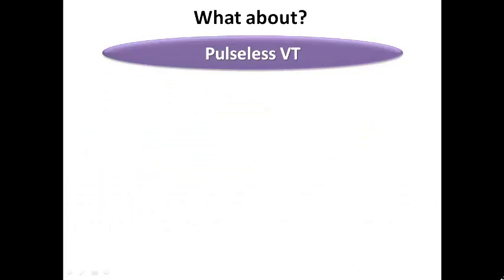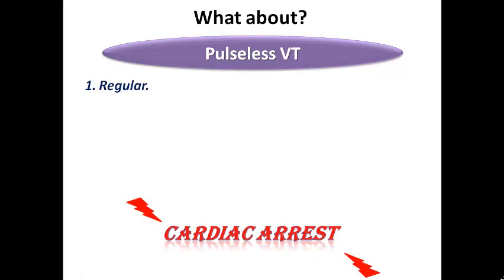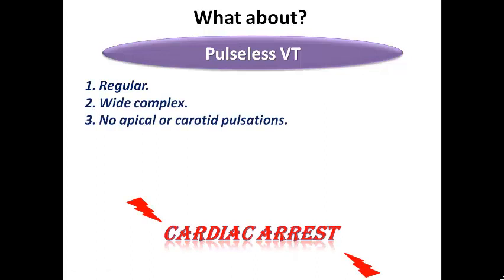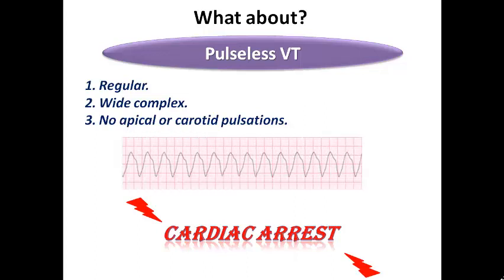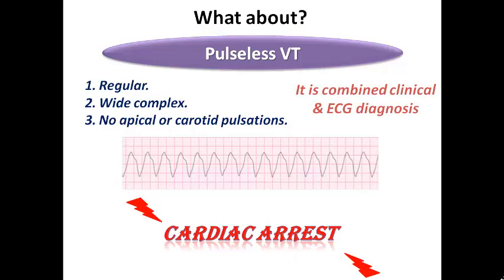Pulseless VT is a clinical term combined with ECG diagnosis — the ECG shows regular wide-complex VT, but the patient has no apical or carotid pulsation, meaning cardiac arrest. That is why pulseless VT is one of the two shockable rhythms in cardiac resuscitation algorithms. On ECG you see VT, but clinically the patient is gasping and in cardiac arrest — no cardiac output despite organized electrical activity.